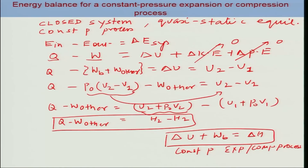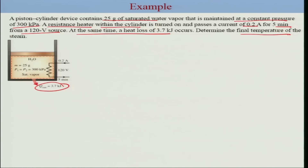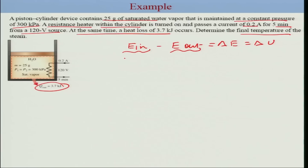Now let us use this analysis to solve a problem. We have a piston-cylinder device containing 25 grams of saturated water vapor maintained at a constant pressure of 300 kPa. A resistance heater within the cylinder is turned on, passing 0.2 amperes for 5 minutes from a 120-volt source, providing electrical work to the system. At the same time, there is a heat loss of 3.7 kilojoules. We need to find the final temperature. Starting with the first law: E-in minus E-out equals delta E, which equals delta U since there is no change in kinetic or potential energy.